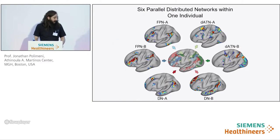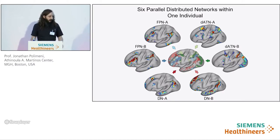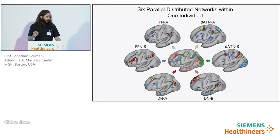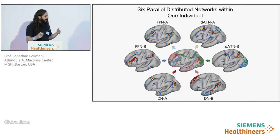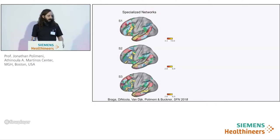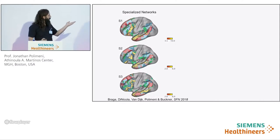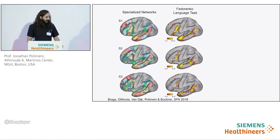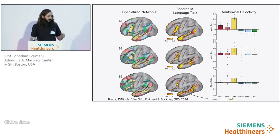They then performed similar analysis of the frontal parietal control network and the dorsal attention network, also located within association cortex. Again, these networks also have complex interdigitated relationships, though there appear to be macroscale gradients of network organization in that sub-networks exhibit the same kind of general progressions across individuals. Finally, in a recent study they also identified a new specialized network that overlapped very closely with activation during a simple language localizer task. This language network appears to be highly specific to language processing with minimal overlap with other networks.